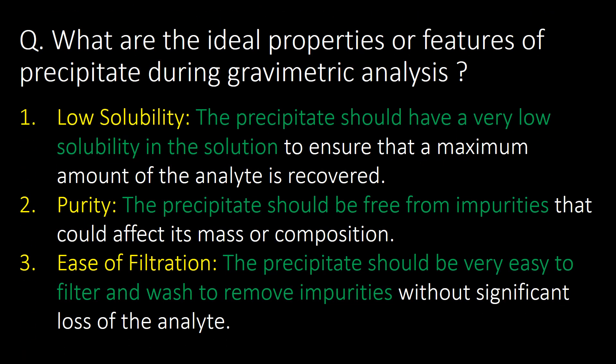What are the ideal properties or features of a precipitate during gravimetric analysis? First property: low solubility — the precipitate should have very low solubility in the solution. Second property: purity — the precipitate should be free from impurities. Third property related to filtration: the precipitate should be very easy to filter and wash to remove impurities.